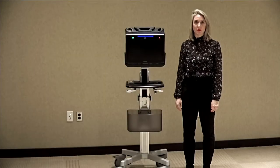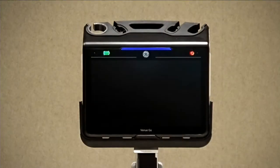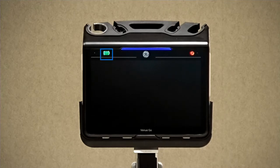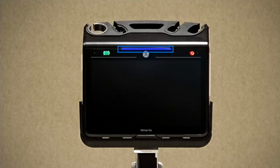The Venue Go has a 15.6 inch monitor. The Venue Go's battery has up to two hours of scanning time, and here you can see two battery indicators that clearly display the remaining scan time: a battery icon and a customizable LED bar.